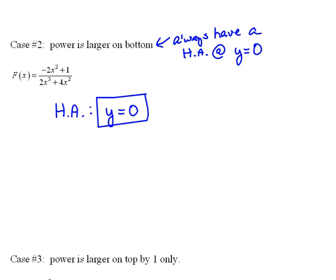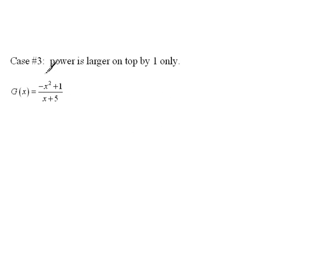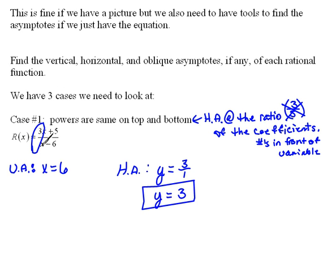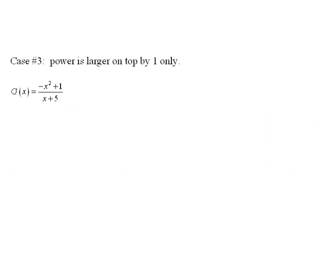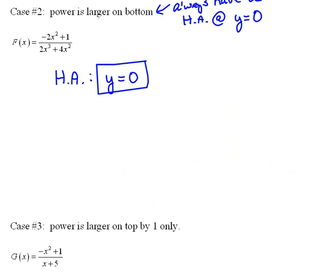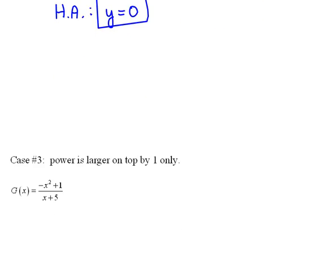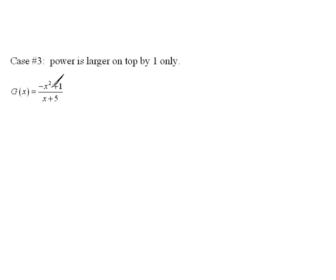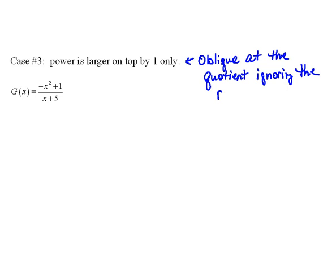Now, the other case - we only have three different possibilities. We talked about either the powers are the same on top and bottom, or the power on bottom is bigger. The only other possibility is if the power on top is larger. In this case, we have an oblique asymptote at the quotient, ignoring the remainder.